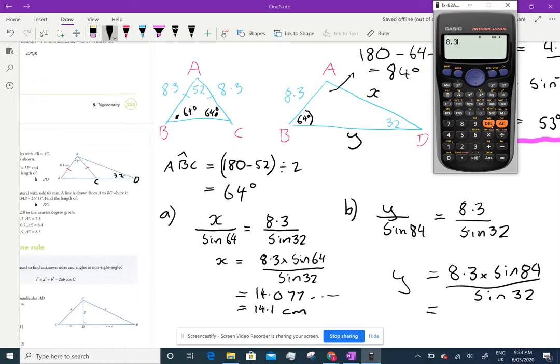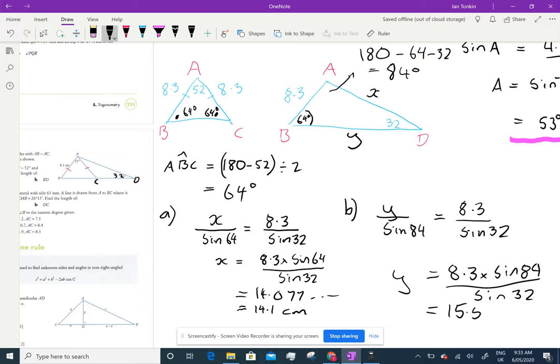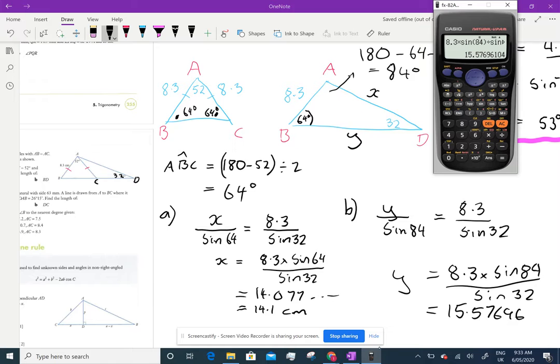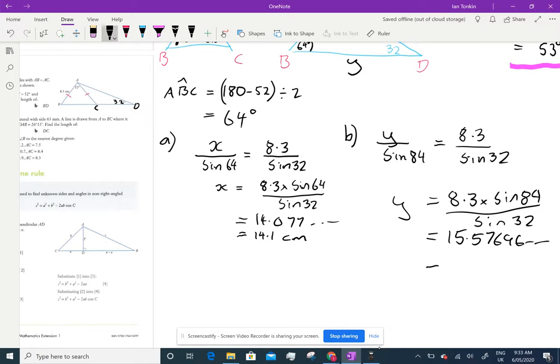So Y equals 8.3 times sine 84 over sine 32. To my calculator: 8.3 times sine 84 divided by sine 32. 15.57696, which equals 15.6 centimeters.